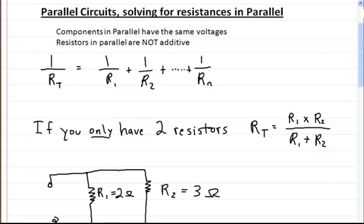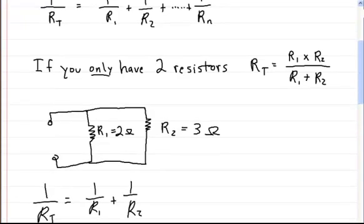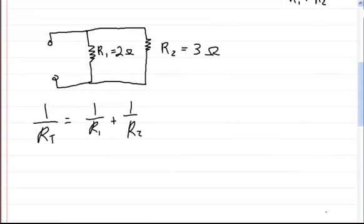There is a formula you can use if you only have two resistors in parallel. We're going to work on a problem down here. I've already entered the formula. You could solve it one way, or you could use the other formula — I'm going to solve it both ways.